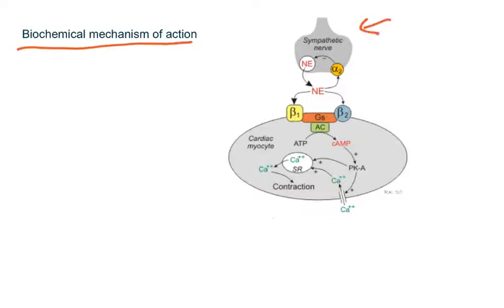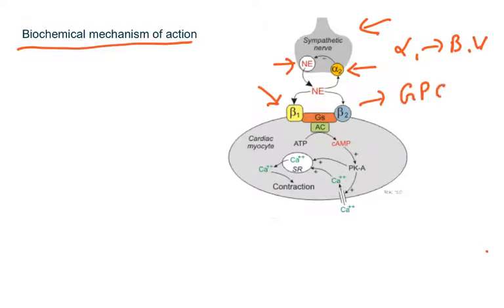When the sympathetic nervous system is stimulated it releases norepinephrine, which acts on beta receptors as well as alpha receptors. Alpha 2 are auto receptors on the neuron, while alpha 1 receptors are present on blood vessels. Beta 1 receptors in cardiac cells are our main concern. Both beta 1 and beta 2 are G protein-coupled receptors; their activation activates a GS protein, which activates adenyl cyclase.